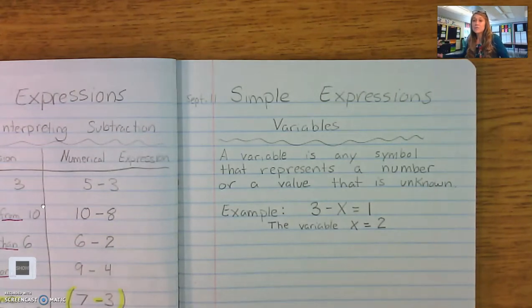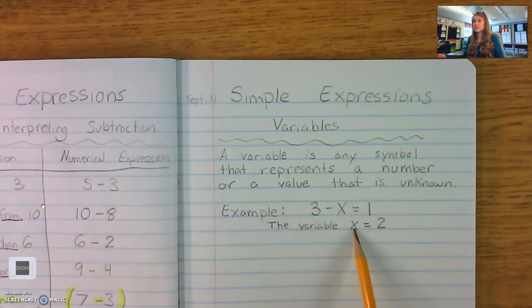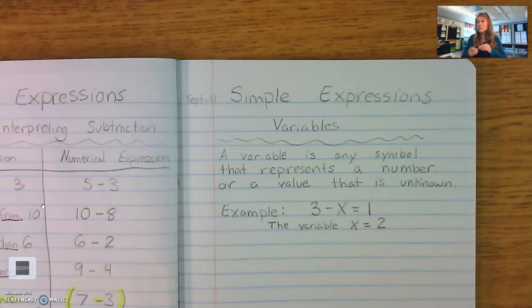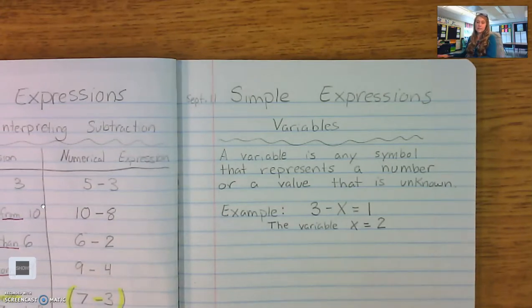Because we start bringing in variables when we get into algebra and one of the variables that we often see is an x. Mathematicians learned very quickly that our multiplication symbol looks a lot like the letter x. This can get people a little confused. Let me show you what I mean.